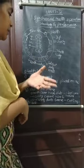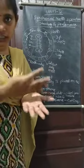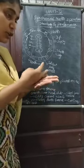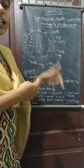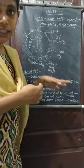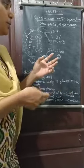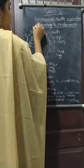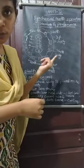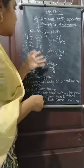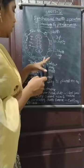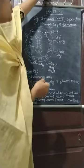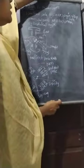Next, the stator core has a number of slots. These slots help decrease eddy current losses. Ventilation ducts are provided for cooling purposes. Next is the three-phase winding, which is mainly for stator purposes. Then we move to the rotor — the rotating part.